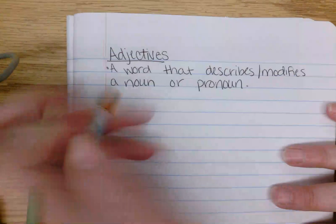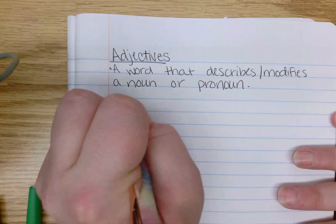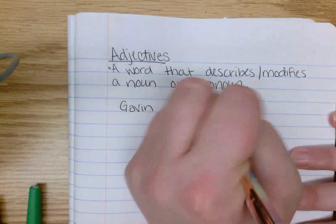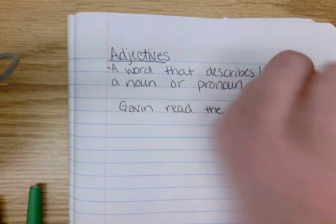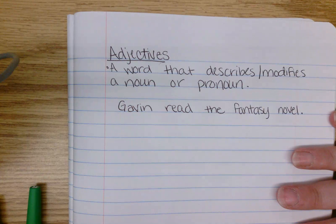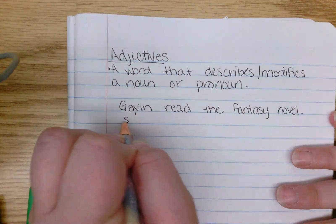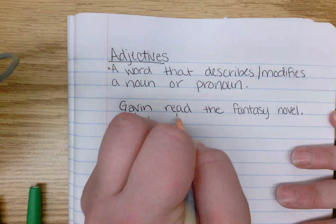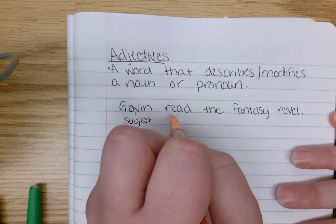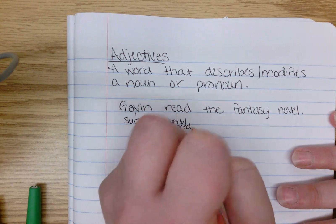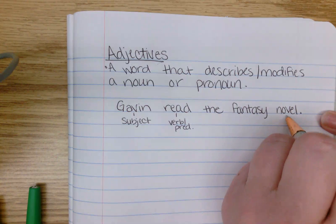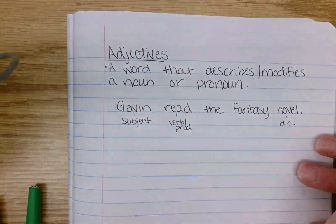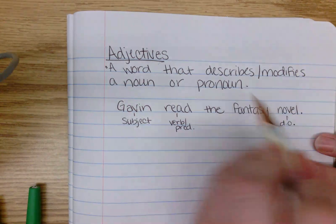So let's write some examples. The subject of my sentence is Gavin. The predicate, or verb, of my sentence is 'read' — that's what he did. And then he read what? A fantasy novel. 'Novel' is the direct object. Remember talking about direct objects? He read what? The novel. What kind of novel?